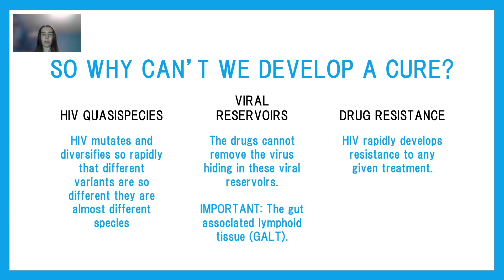Since previous research has found all the proteins HIV encodes for, shouldn't it be easy to develop a cure? The problem with HIV is that it develops drug resistance very rapidly to every treatment we've developed so far, because HIV has a very high mutation rate, so it quickly evolves a variant that is resistant to that given treatment. Even today, we combine multiple drug treatments to prevent breakthrough infections, but this still can't cure HIV.